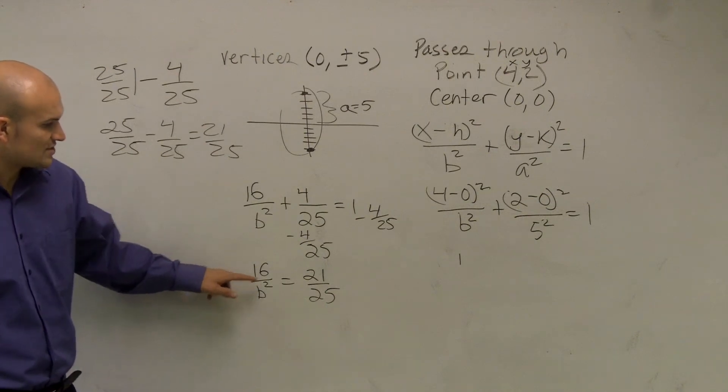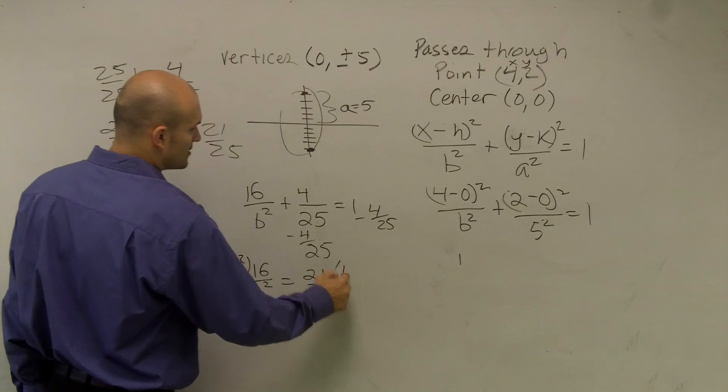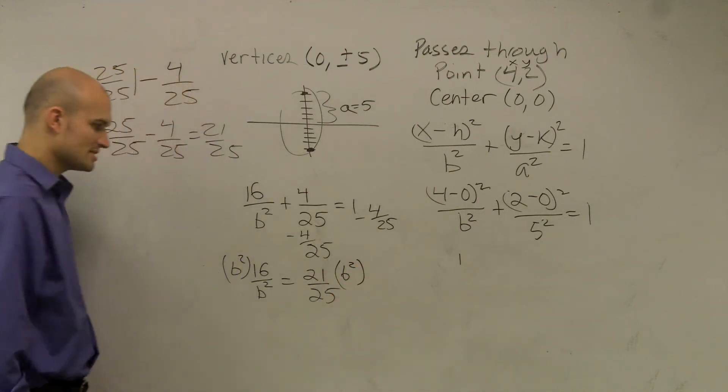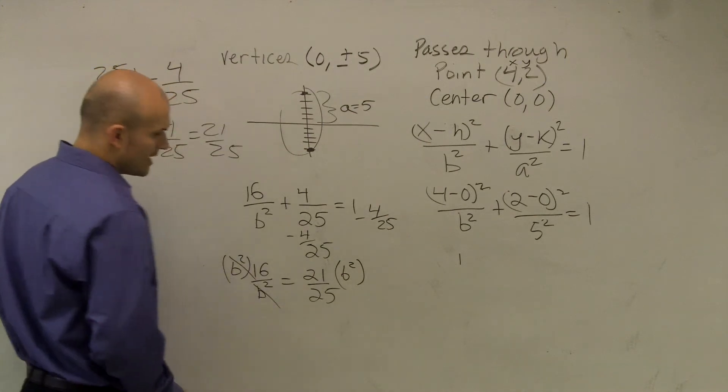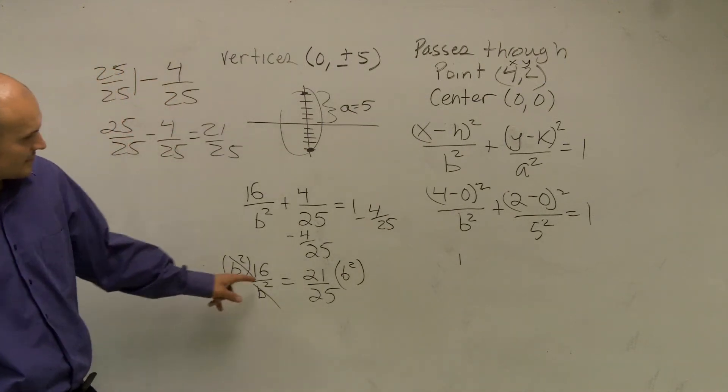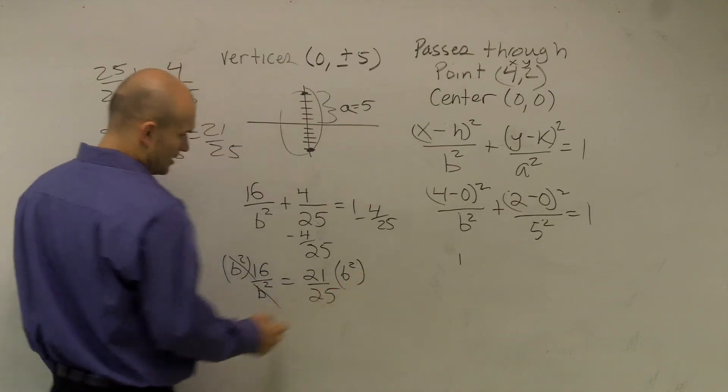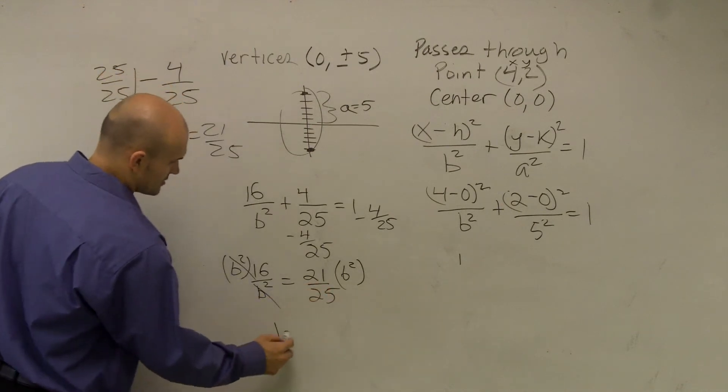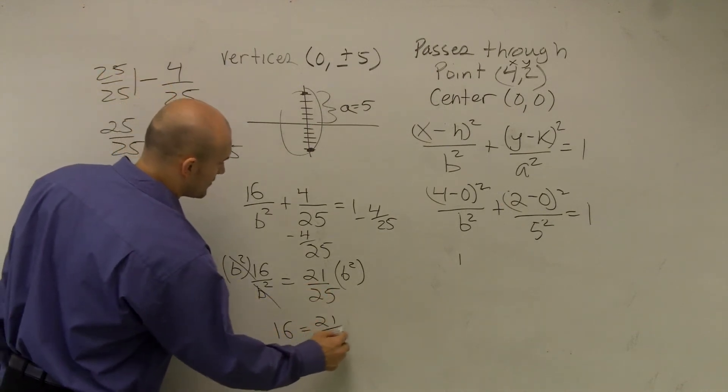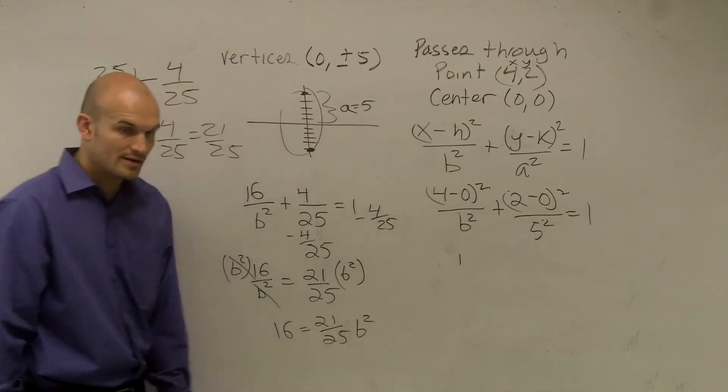Now, to solve for B², I've got to get it off the bottom, so I multiply by B² on both sides. That cancels out. Therefore I have B² times 21/25 equals 16, so 16 equals (21/25) times B².